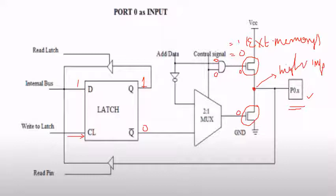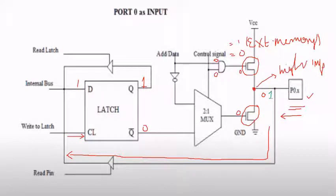Since it is an input port, if it wants to write a 0, it will overwrite the high input impedance state, and that particular 0 is being read through the read pin. Similarly, if we want to write a 1, that particular 1 is overwritten on the high impedance state, and that 1 is also read through this read pin or through this buffer. This is how Port 0 acts as an input port.